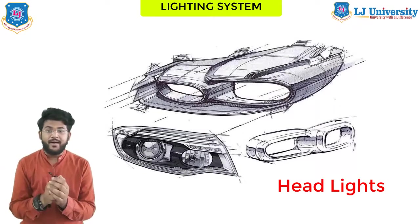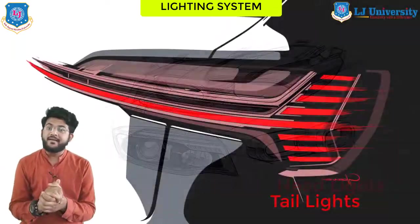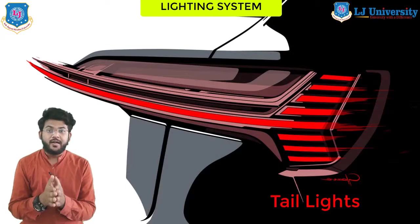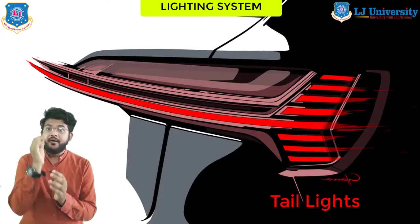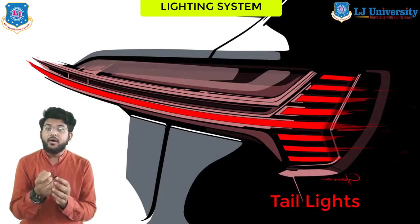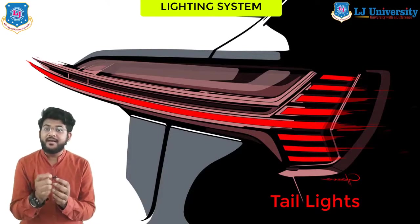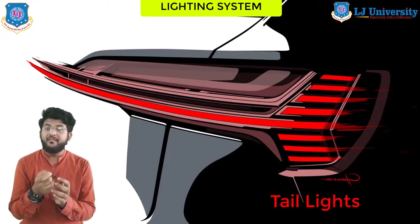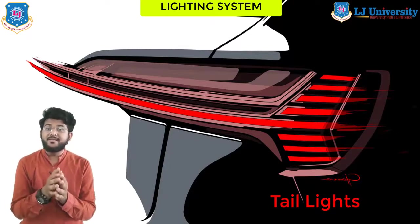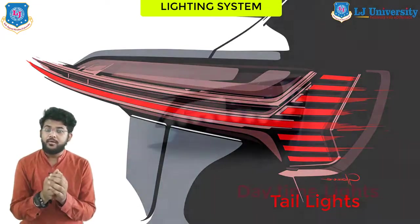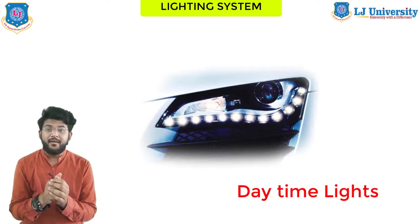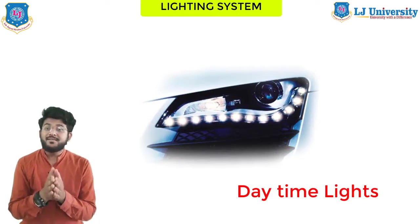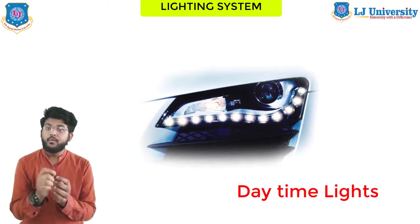Next are tail lights. Tail lights are required to produce only red light at the rear of the vehicle, and they are wired such that they light up whenever the headlights are on. This helps the driver traveling behind you to recognize that you are there in front and how far ahead you are from them.